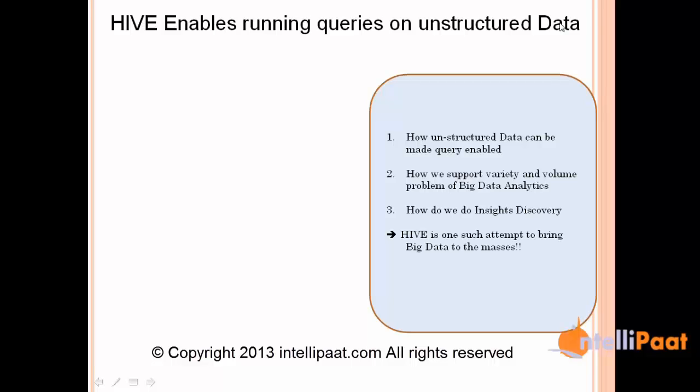How can unstructured data be made queryable? That's the first thing we try to start with. You have looked at Hadoop and know how files are stored there. When you store a file in Hadoop, it's still a raw file. If you want to make that file queryable, that's one constraint. You're looking at a text file — for example, a file collected by analyzing some logs, like a website log.